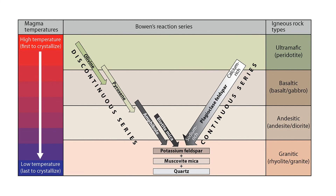Note that if we could freeze the system and retrieve the rocks with the listed minerals at any of these four stages, we would obtain rocks that would be ultramafic, mafic, intermediate (andesitic), and granitic.